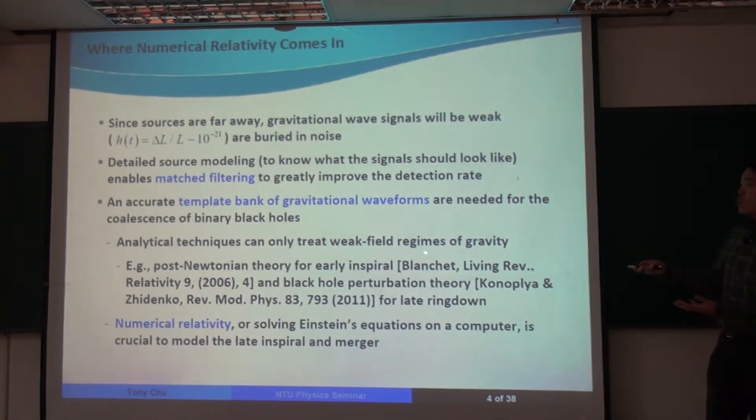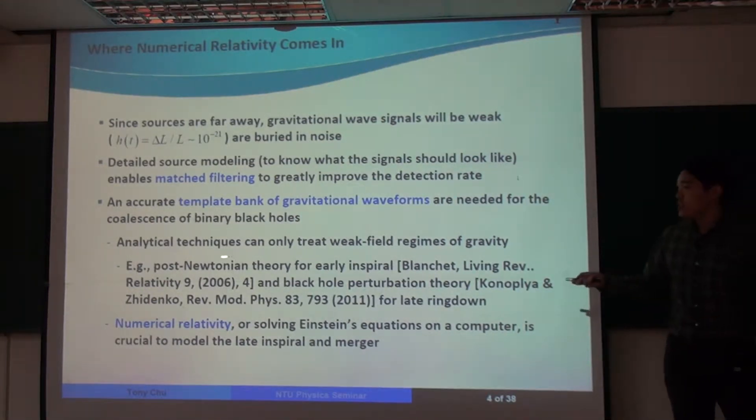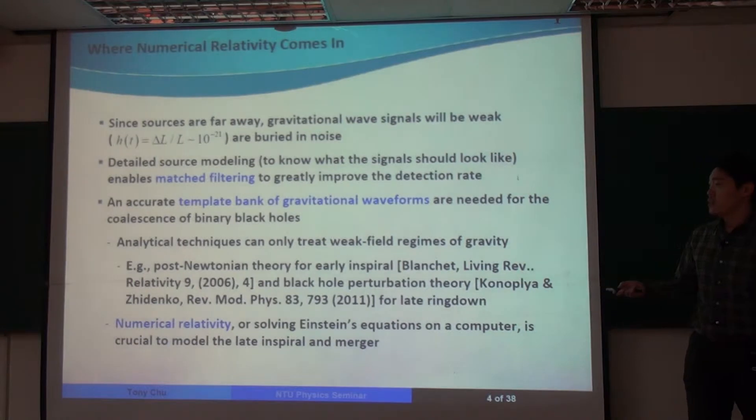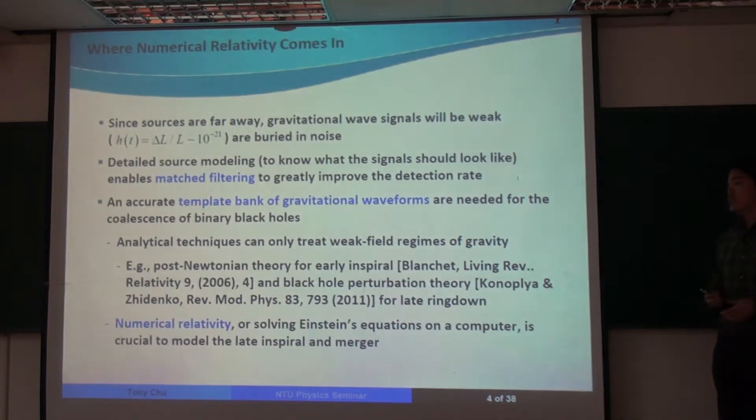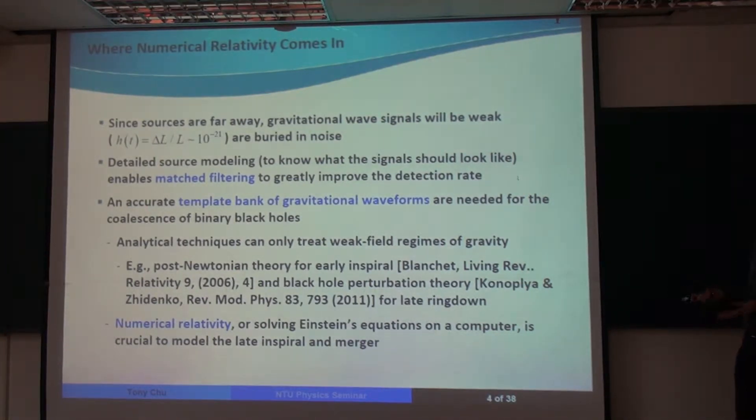So traditional analytical techniques, they're good at treating weak field regimes of gravity. For example, there's post-Newtonian theory, which is a weak field slow motion approximation to general relativity, and that's good for treating the earliest spiral of the two black holes when the black holes are still very far apart, and their interaction with each other is not very strong.